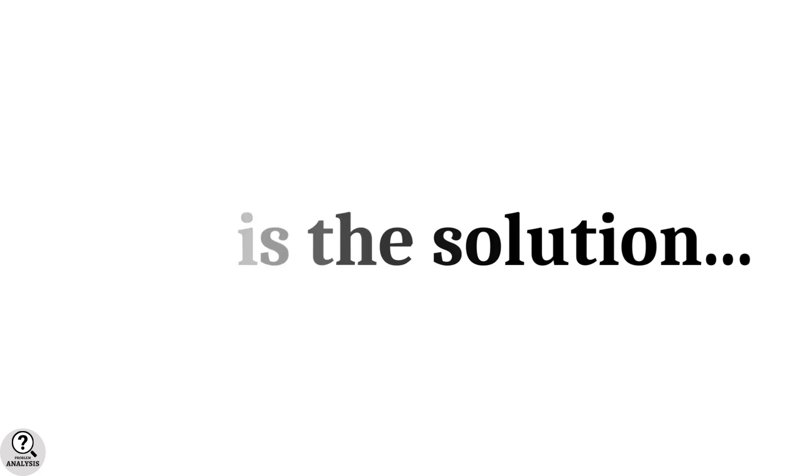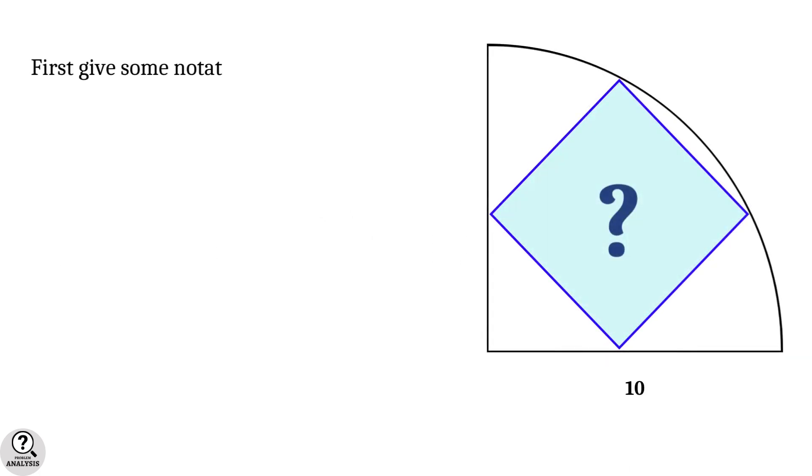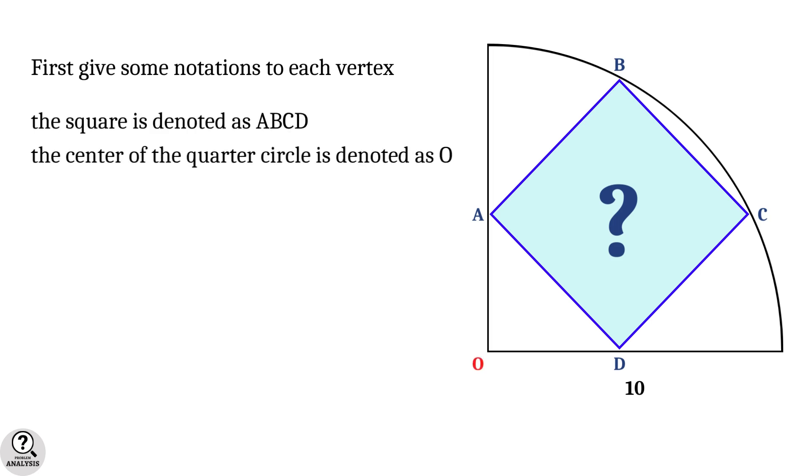The solution is right here. First, we give some notations to each vertex. The square is denoted as ABCD and the center of the quarter circle is denoted as O.